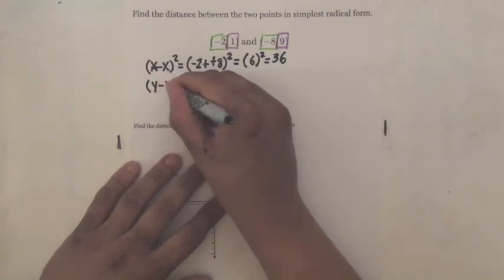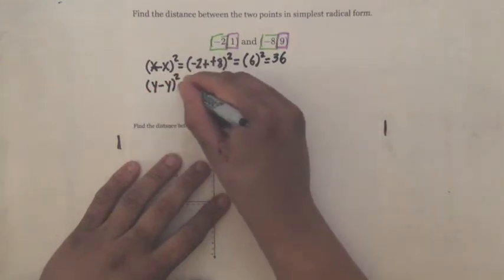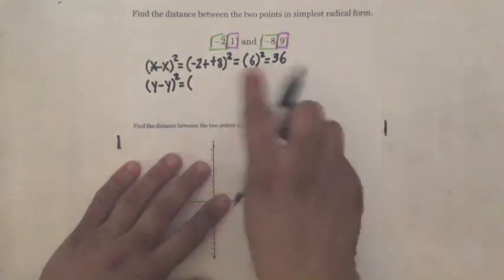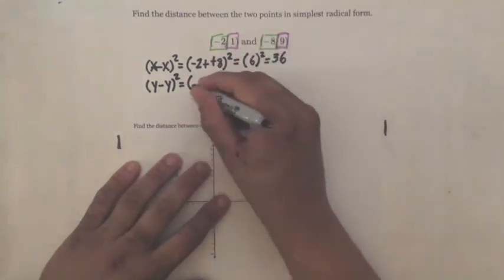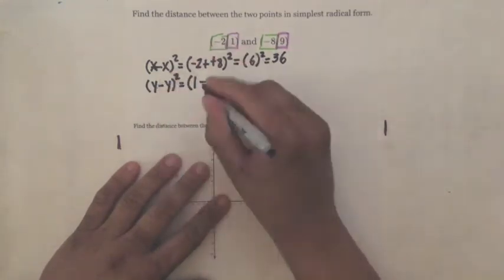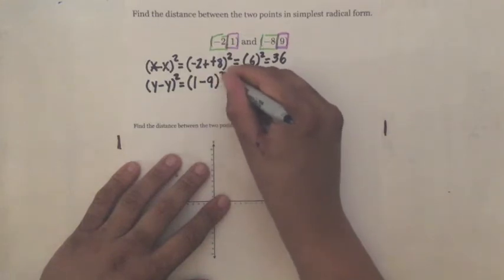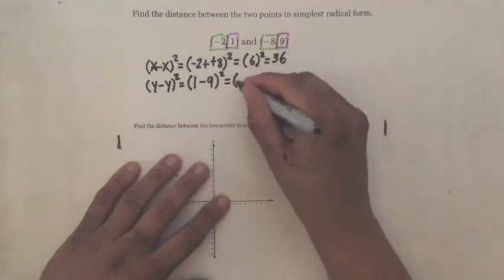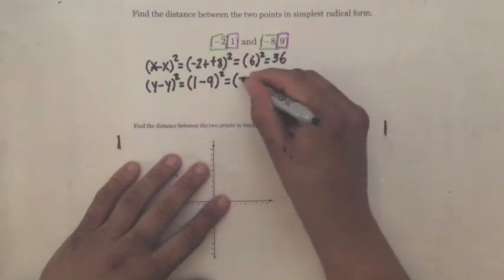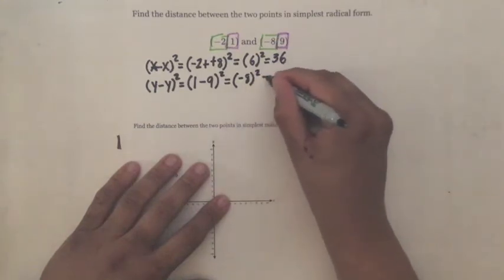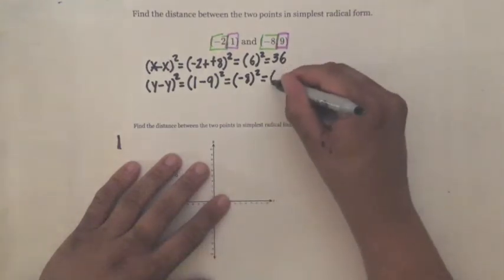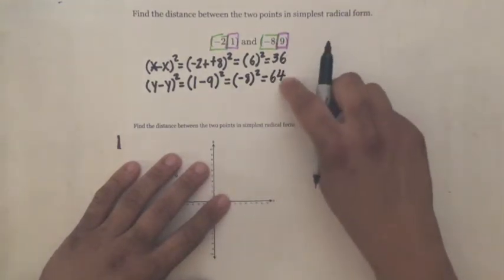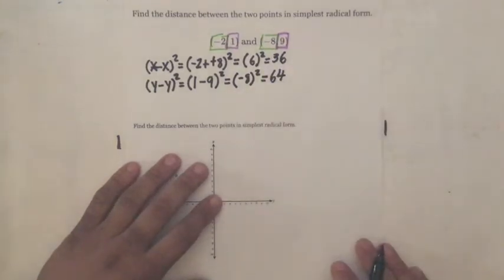Now let's do our Y's. Y minus Y squared. So our Y's are in purple. One and nine. One minus nine squared. One minus nine is, there are different signs. Nine minus one is eight. And nine is a bigger integer and it's negative. So negative eight squared. Negative eight times negative eight is positive 64. Remember, these two numbers will always be positive because when you square a negative or a positive, you get a positive. Negative times negative is positive. Positive times positive is positive.